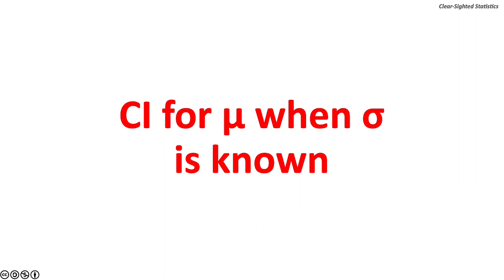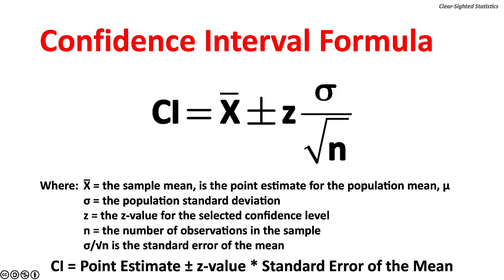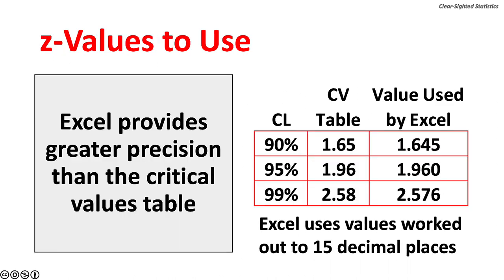Let's review confidence intervals for the population mean when the population standard deviation is known. The formula is: the point estimate, which is the sample mean, plus or minus the critical value of Z for the selected confidence level, times the standard error of the mean. The standard error of the mean is the population standard deviation over the square root of n, the sample size. The critical values can be found using the area under the curve table or Microsoft Excel. Excel provides greater precision, calculating critical values to 15 decimal places, versus only two decimal places in the table.